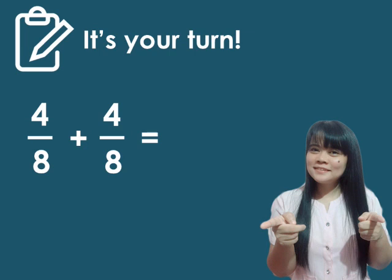Next. 4 over 8 plus 4 over 8. What would be the answer? You get it right. That is 8 over 8. Since 8 over 8 can be simplified, the answer will be 1.